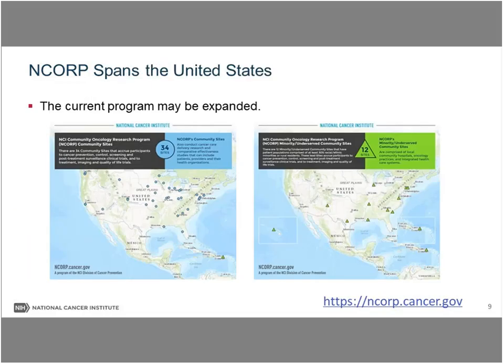We currently have 34 community sites and 12 minority underserved sites. We were given approval by the Board of Scientific Advisors to expand to 36 community sites, 14 minority underserved sites, and 7 research bases. It is important to visit our website for a better appreciation of our breadth. Some sites traverse states, which is important as you think about how you implement and enroll patients on trials, as there may be state-specific factors that influence enrollment.